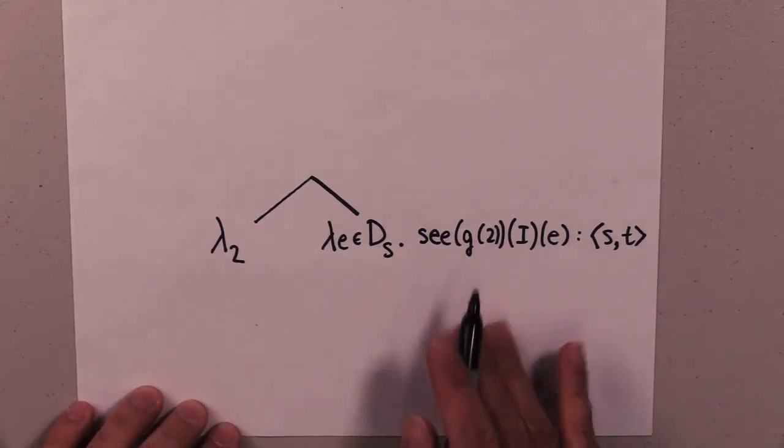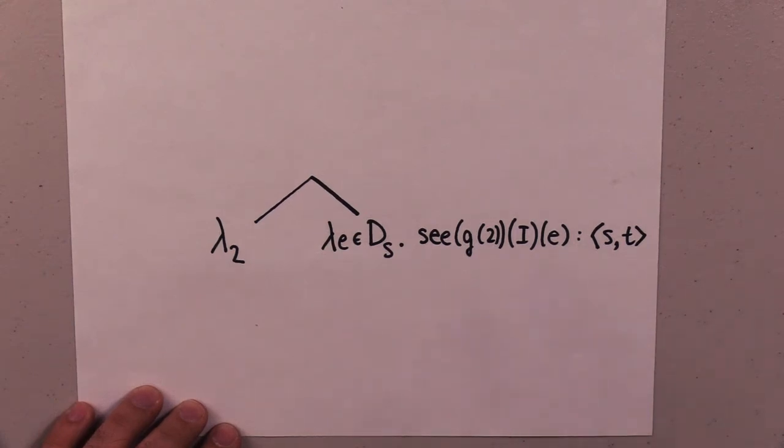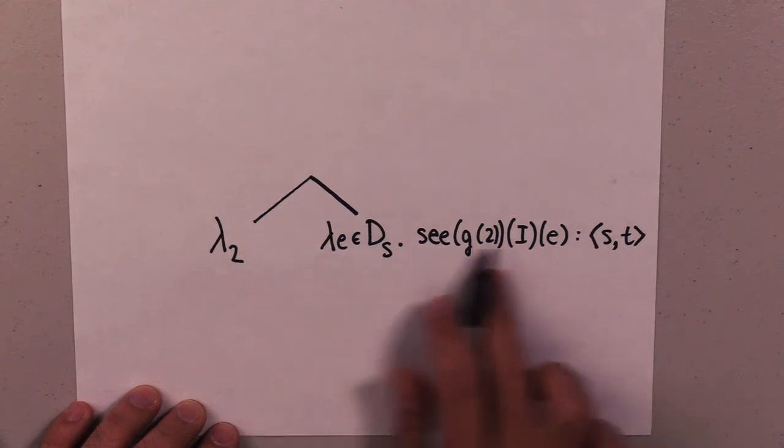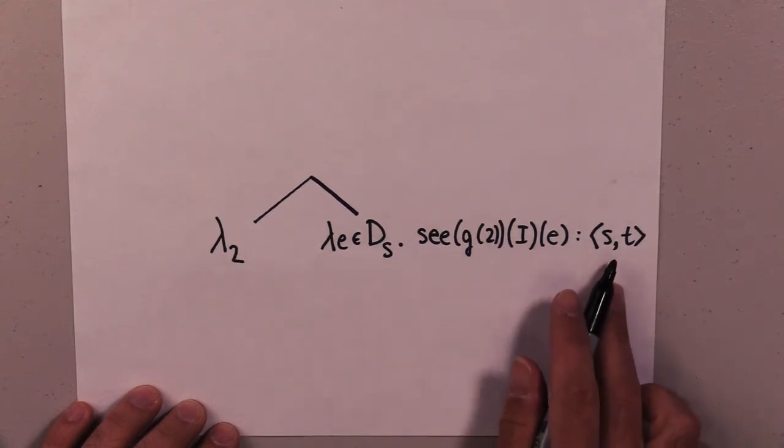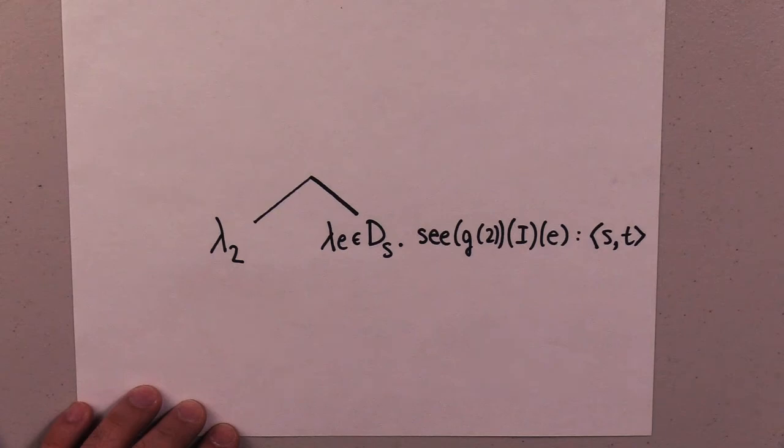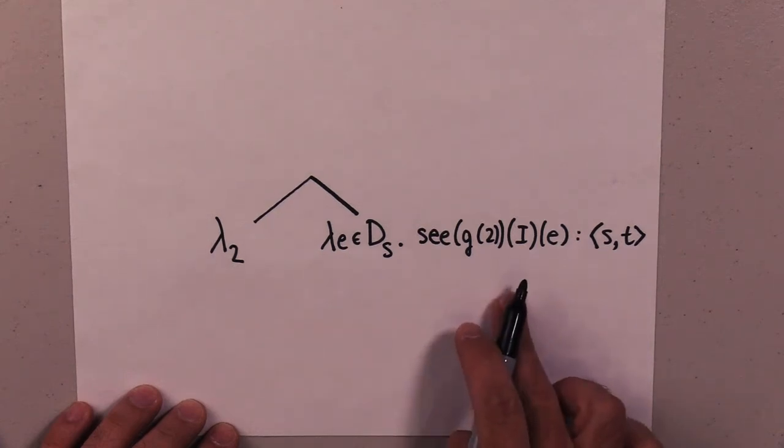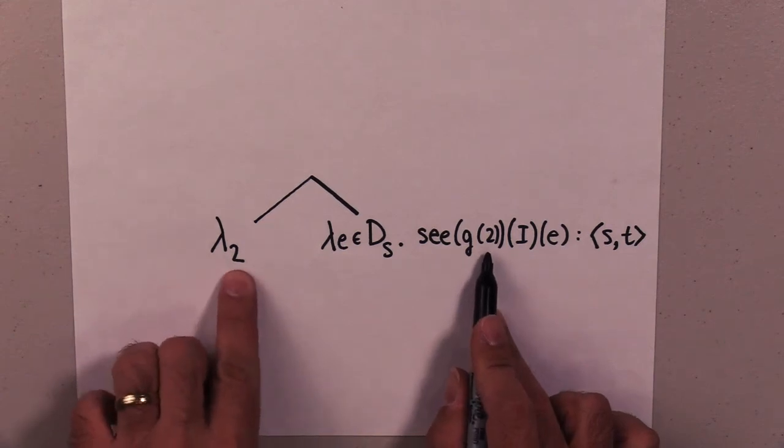So we're abstracting in this case over a property of events, in this case I C G of 2. Again, maybe for quantification. Now abstraction does not care what's here, what type it is or anything. It could be a simple type like we saw, it could be a complex type like this. The rule will be exactly the same. You need an index in there somewhere.